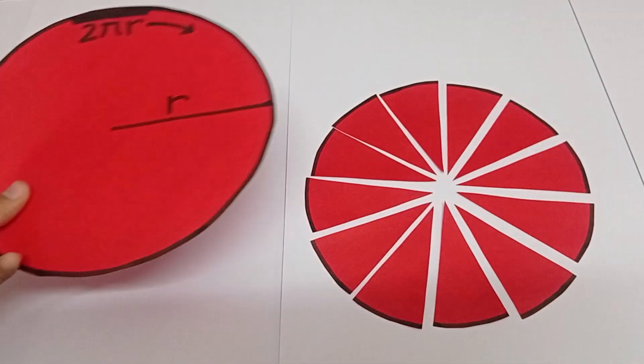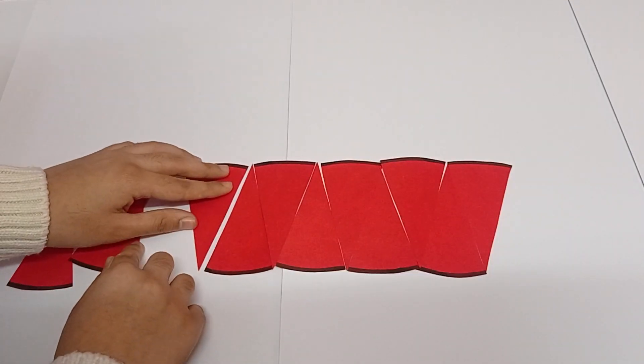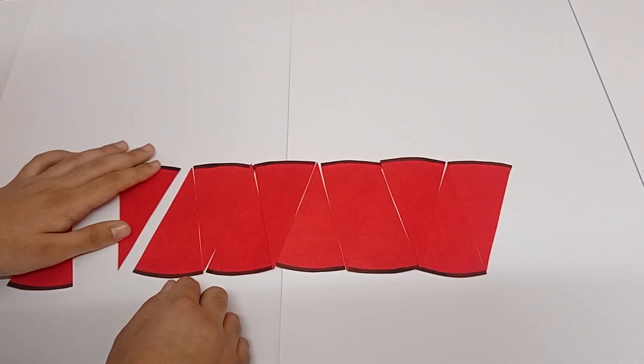Take a circle and divide it into 12 equal parts. I just rearranged these parts.